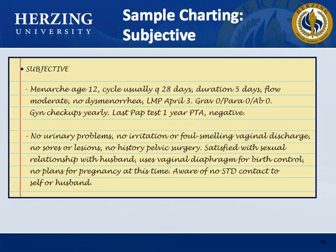Sample note — subjective data: Menarche age 12, cycle every 28 days, duration 5 days, flow moderate, no dysmenorrhea. Last menstrual period April 3rd. Gravida 0, para 0, AB 0. Gynecological checkups yearly; last Pap test one year prior to admission, negative. No urinary problems, no irritation or abnormal vaginal discharge, no sores or lesions, no history of pelvic surgery. Satisfied with sexual relationship with husband, uses vaginal diaphragm for birth control, no plans for pregnancy, aware of no STD contact to self or husband.